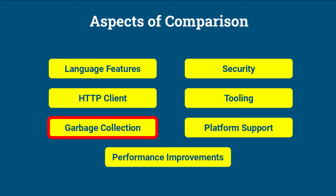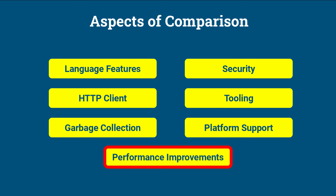Garbage Collection. Java 8 included various garbage collectors such as Serial, Parallel, CMS, and G1. Java 11 introduced the Epsilon Garbage Collector, which is a no-op garbage collector that does not perform any memory reclamation. This is useful for performance testing and scenarios where memory management is not a concern.